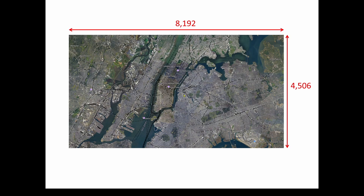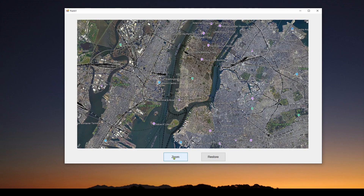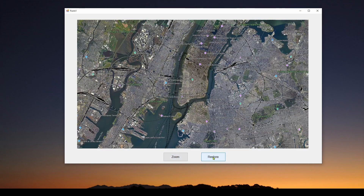Another approach is to take this 8K image and when you zoom past a certain point, get another 8K image captured from a closer location — for example from Google Earth. What we're going to focus on is the first approach: cropping an image and expanding it, then cropping again and expanding, to keep zooming. Each time the zoom button is hit, we crop the original image and expand that cropped image into the picture box. The restore button brings it back to the original.